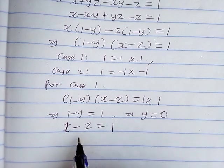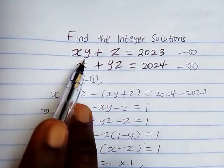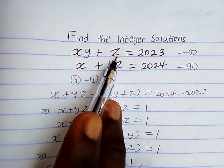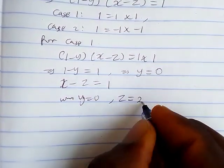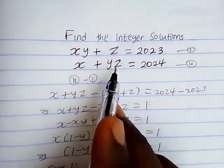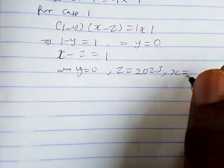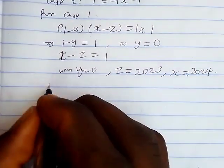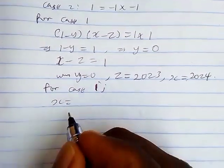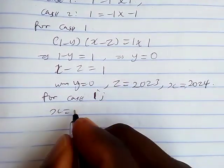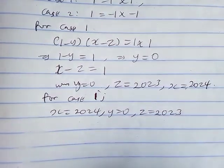Now that we have y equals 0, we substitute back into equations 1 and 2. When y equals 0 in equation 1, the xy term vanishes, so z equals 2023. Similarly, when y equals 0 in equation 2, x equals 2024. So for Case 1: x equals 2024, y equals 0, and z equals 2023.